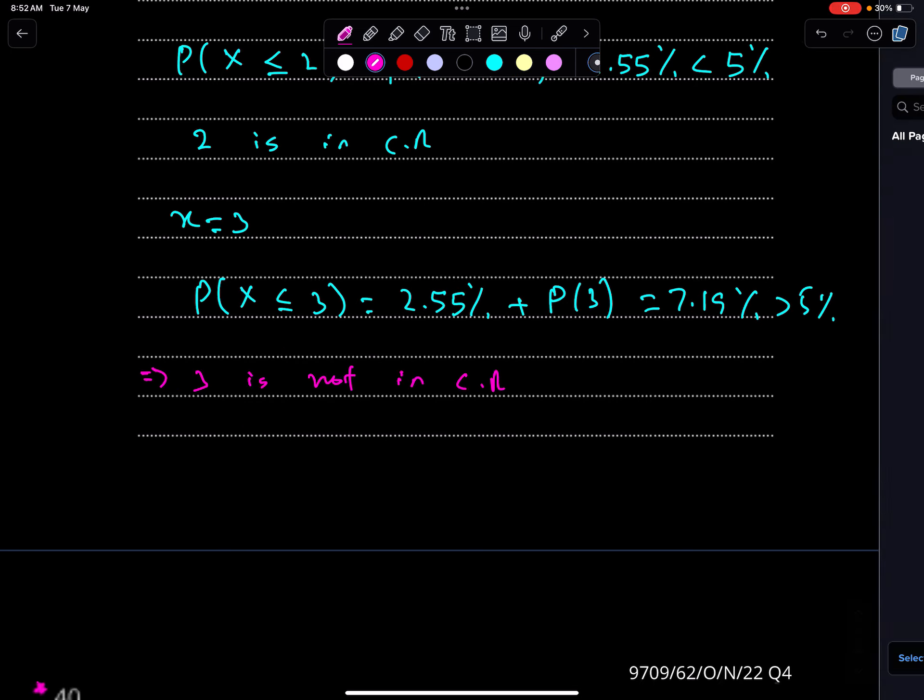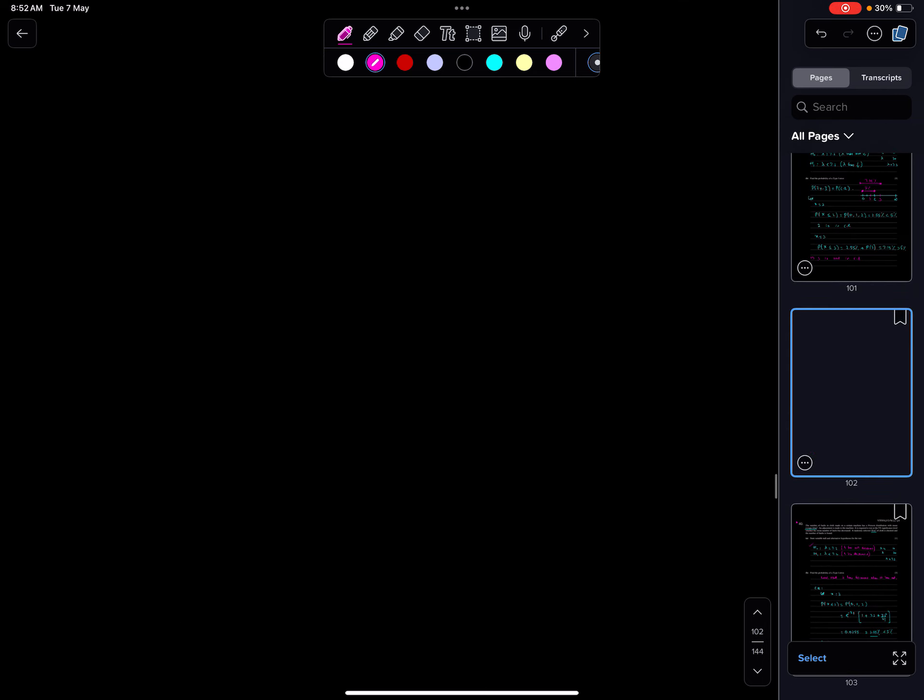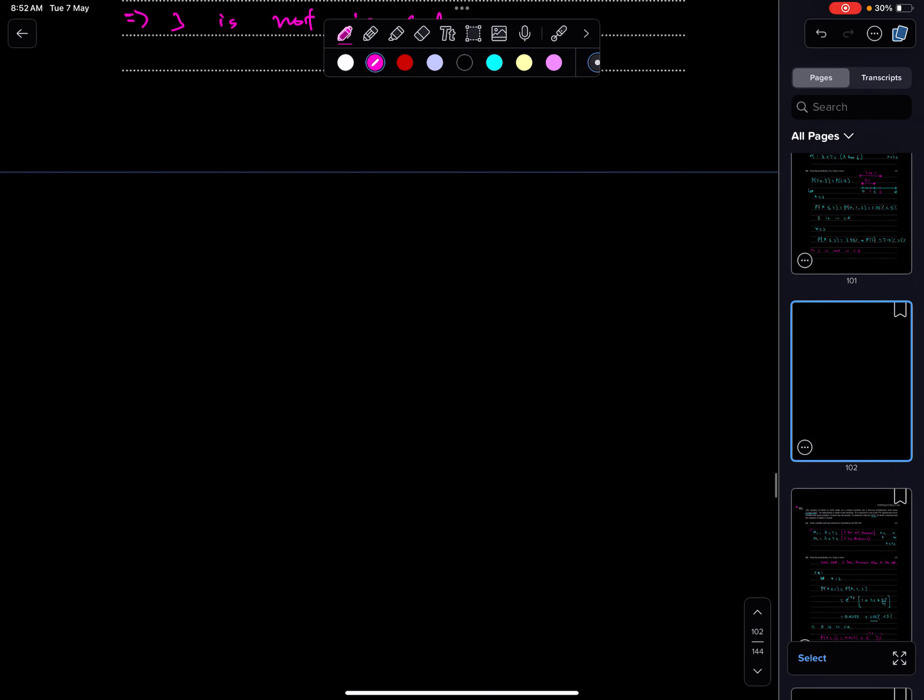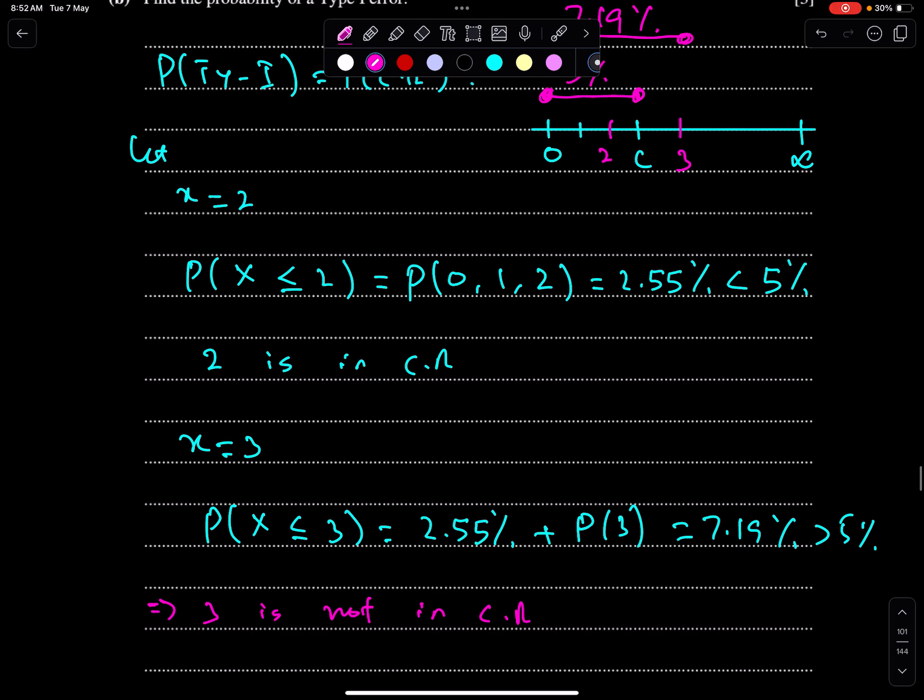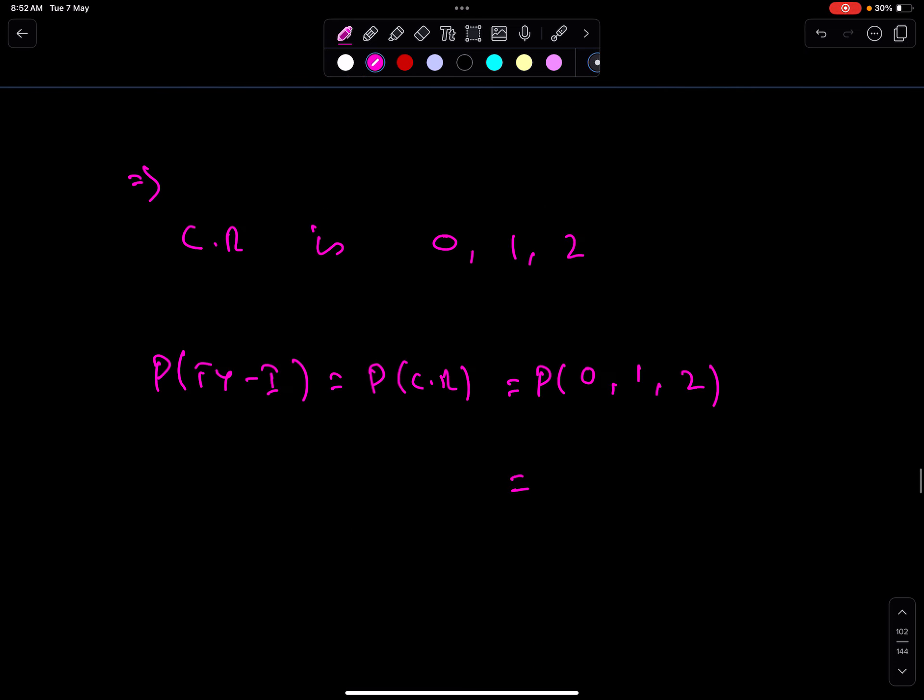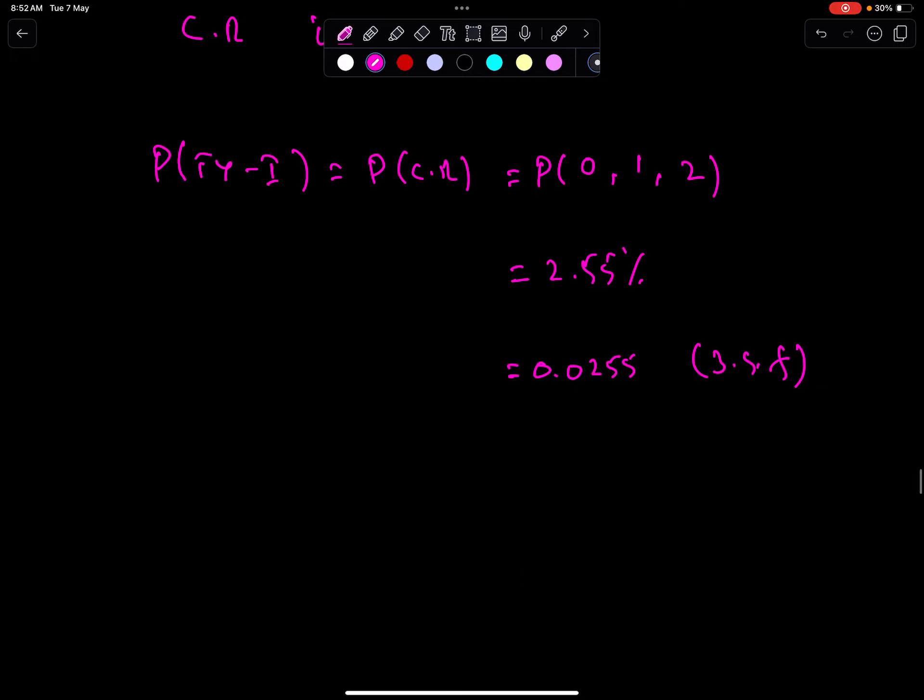Therefore, critical region is 0, 1, and 2. So probability of type 1 is probability of critical, which is probability of 0, 1, and 2, and this answer is 2.55%. You can write this as 0.0255, three significant figures. So this is the way to find probability of type 1 error, both in binomial and Poisson.